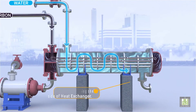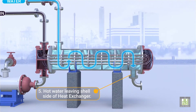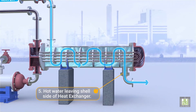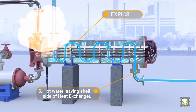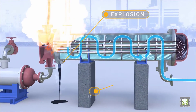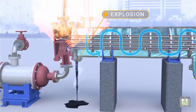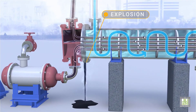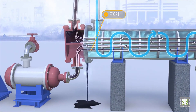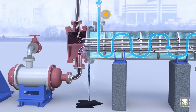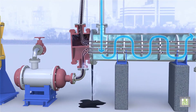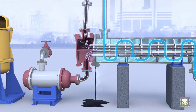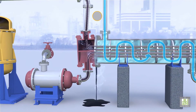5. Hot water leaving the shell side of the heat exchanger. The heat exchanger is typically provided with low or high point vents to remove water from the tubes or the shell. Uncontrolled mixing of water with hydrocarbons can generate high pressure conditions and can damage systems that are not equipped with pressure relief devices.